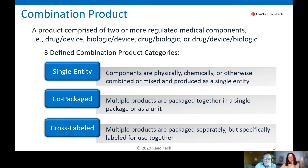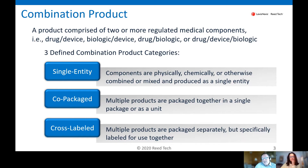So those are the three different types of product categories. Packaging and intended use are the key drivers as to how you fall into each category. For single entity, all components are in a single package and form a single item. For the other two, you have independent items and packaging determines whether they are packaged together or packaged separately. This will flesh out a bit better when we look at some examples of each product category.